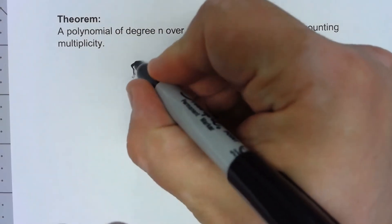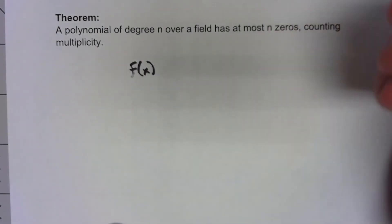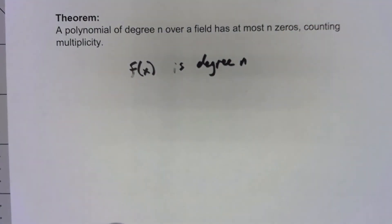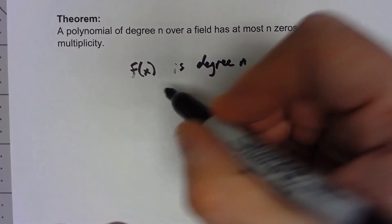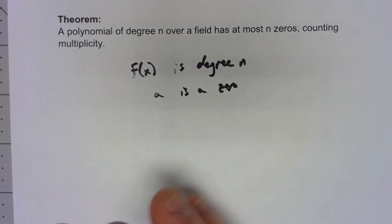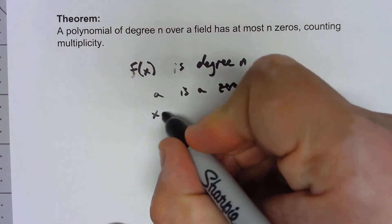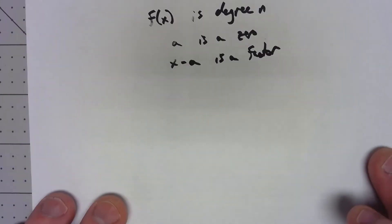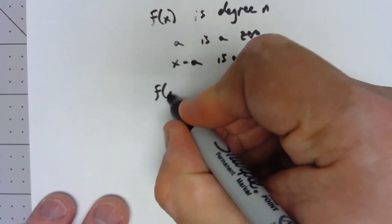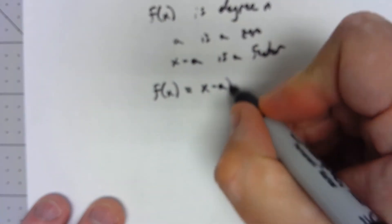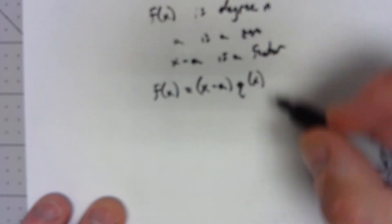So let's say you've got a polynomial f(x) and that's degree n. And let's say that A is a zero. By the previous corollary we know that x minus A is a factor. So that means that by the division algorithm f(x) is equal to x minus A times some q(x) plus the remainder, but we know that the remainder is zero.